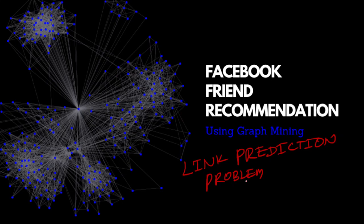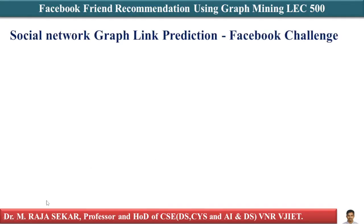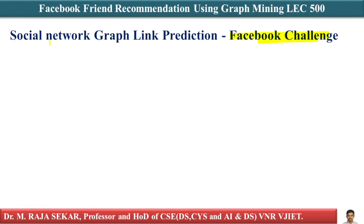We are using the dataset provided by Facebook as part of a Facebook challenge. This is the link prediction problem. Let me explain the basic problem we have here.